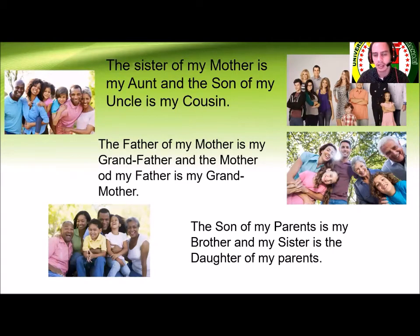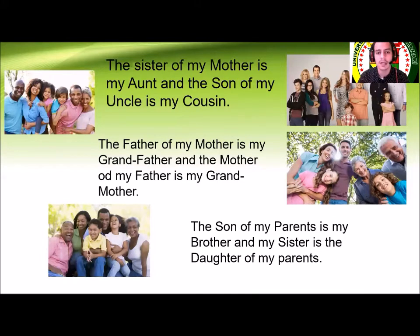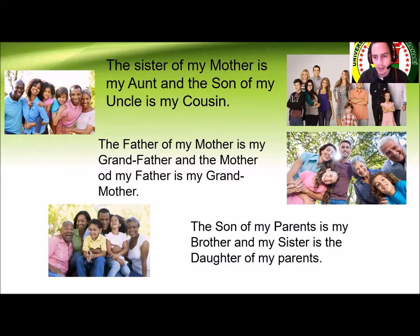So here we have some parts - we have examples, parts that you need for your homework - partes que necesitan para realizar sus deberes. For example: The sister of my mother is my aunt - la hermana de mi mamá es mi tía. The son of my uncle is my cousin - el hijo de mi tío es mi primo.